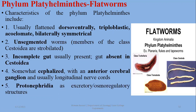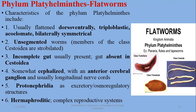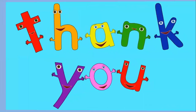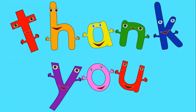Important characteristics include protonephridia, which are excretory structures also known as the flame cell system. Excretion and removal of nitrogenous waste is well developed. They are hermaphroditic — that is, both male and female sex organs and gonads are present in the same individual. That concludes the introduction to this chapter; next we will discuss Turbellaria, the first class of Platyhelminthes.